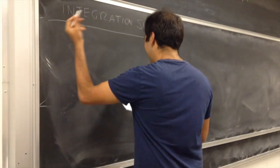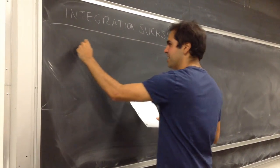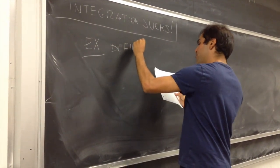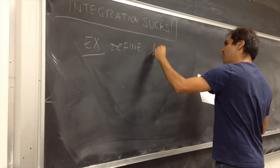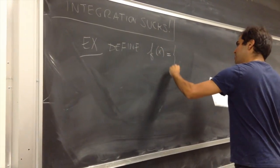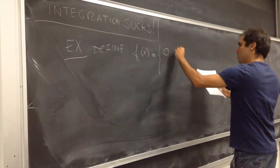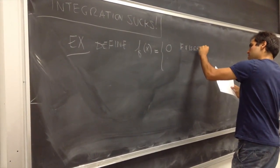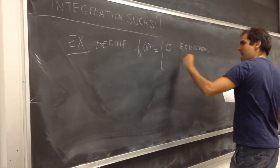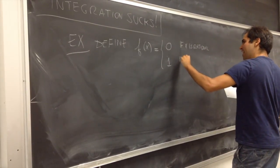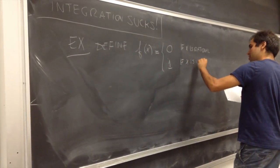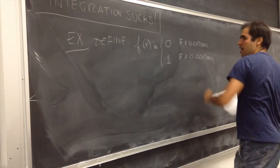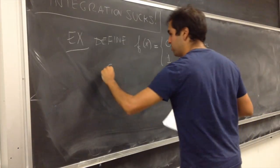Freaky, huh? Okay, so let me tell you what the function is. Define f as follows. f of x equals 0 if x is rational, and 1 if x is irrational, on the interval 0 comma 1.